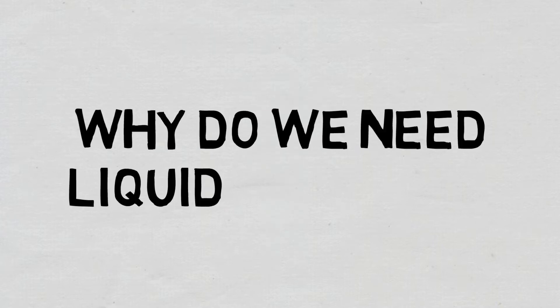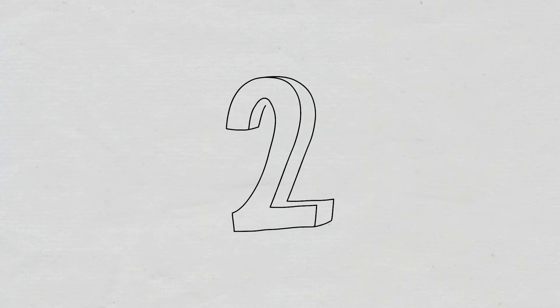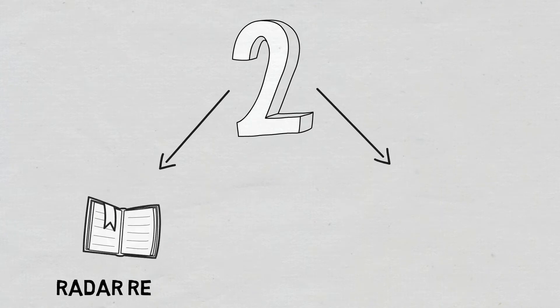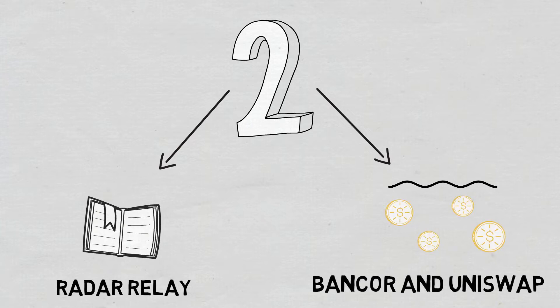Why do we need liquidity pools? There are currently two types of DEXs on Ethereum, namely order book peer-to-peer exchanges, such as Radar Relay, and liquidity pool exchanges, such as Bancor and Uniswap.